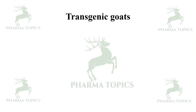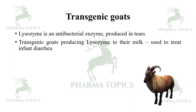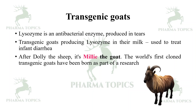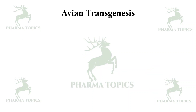Transgenic goats: lysozyme is an antibacterial enzyme naturally produced in tears. Transgenic goats producing lysozyme in their milk have been developed to treat infant diarrhea. After Dolly the sheep, Milly the goat became the world's first cloned transgenic goat. The milk of another transgenic goat contains antithrombin III, which is used in coronary artery bypass grafting.